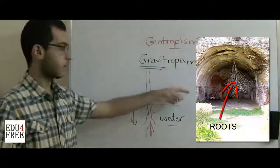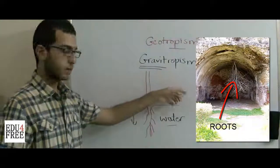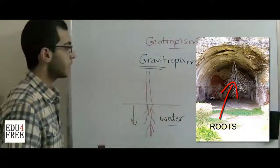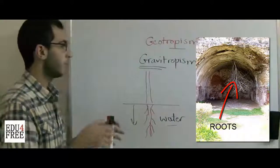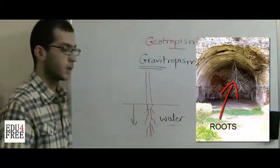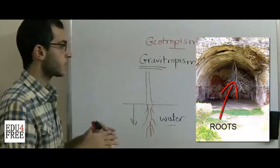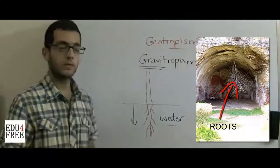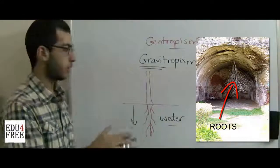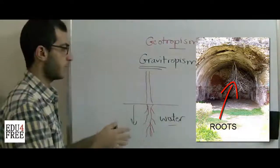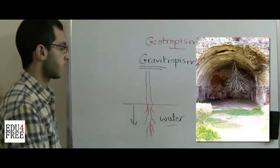If you look at this picture, we can find that the roots of this tree grow into a vacuum — they just grow downwards. There isn't any soil, and there isn't even any water except for water vapour in the air in this vacuum, which is insufficient for plant growth.